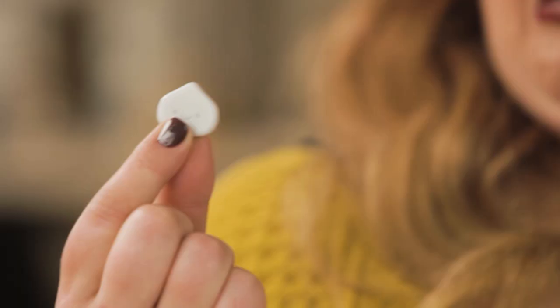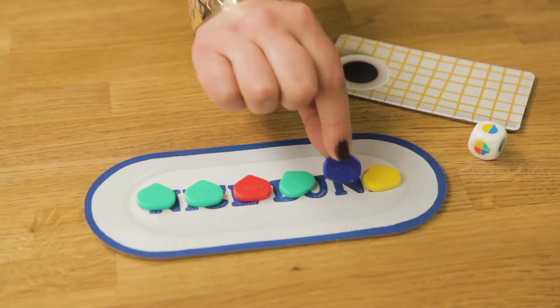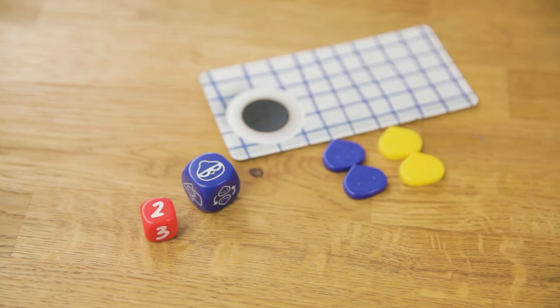Whenever you remove a bun from the serving tray you must replace it with one from the steamer bag. And remember fish head buns never go on the serving tray. If you draw one just put it back and try again.